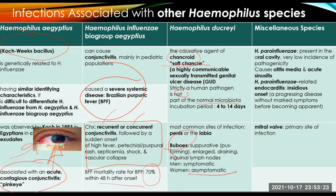Men have symptoms related to inguinal tenderness and genital lesions, whereas most women are asymptomatic. The miscellaneous species H. parainfluenzae is present in the oral cavity with very low incidence of pathogenicity, though it can still cause otitis media and acute sinusitis. For parainfluenzae-related endocarditis, which has an insidious onset, the primary site of infection is always the mitral valve of the heart.